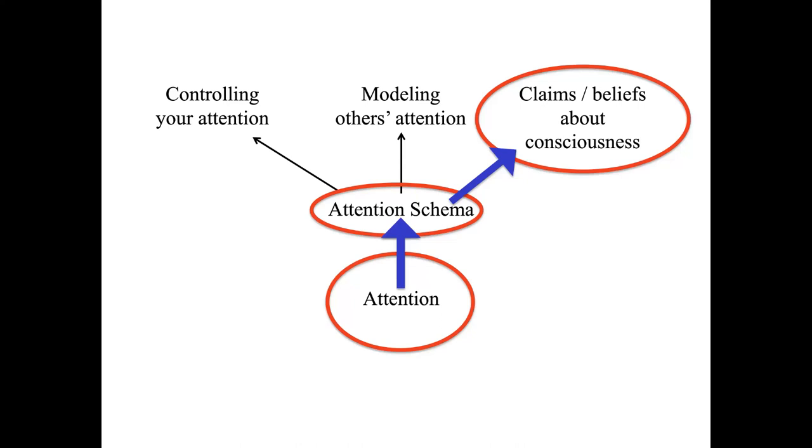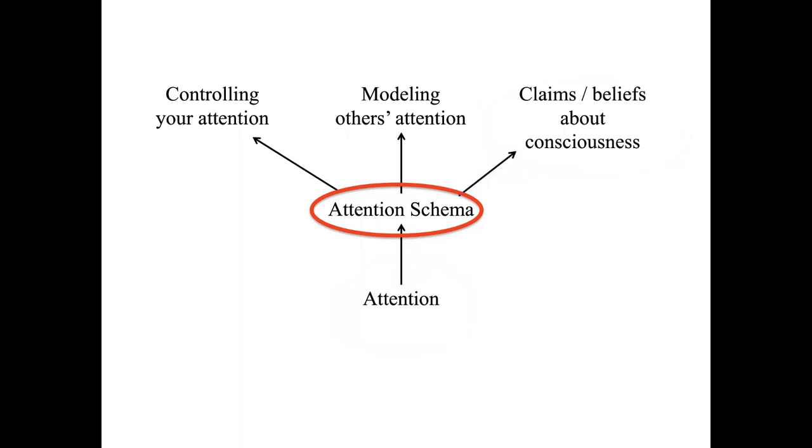So is AST correct? Does the brain actually construct a model of attention, an attention schema, and use it for these purposes? Evidence for AST so far comes from many different directions. Here I'll give only a brief summary of some of the evidence. Because again, I want to get across the underlying concepts and not the experimental details. You can read about those on your own.